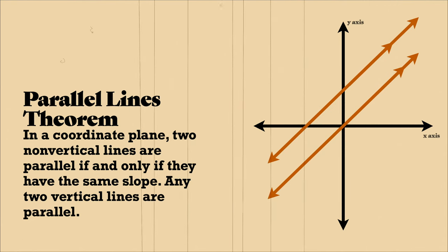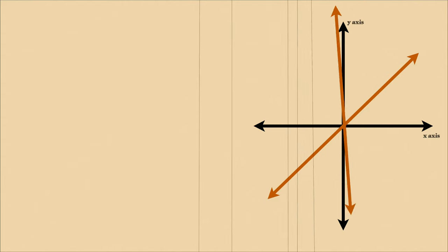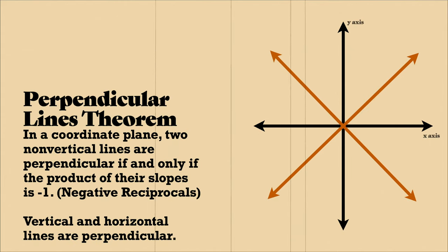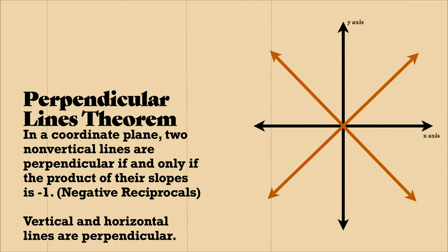Now that we've talked about parallel lines, let's talk about perpendicular. In a coordinate plane, two non-vertical lines are perpendicular if and only if the product of their slope is negative 1. That is a negative reciprocal. Vertical and horizontal lines are perpendicular.